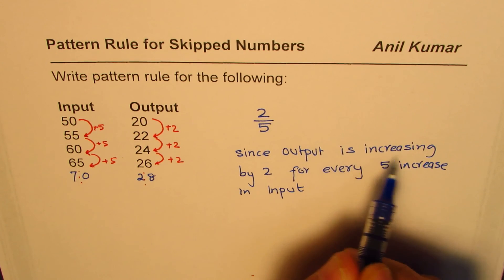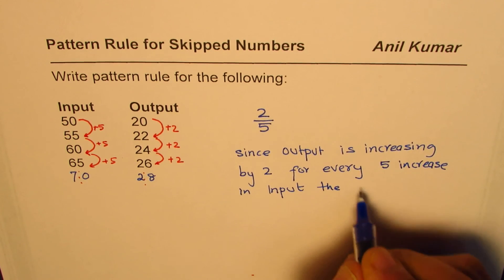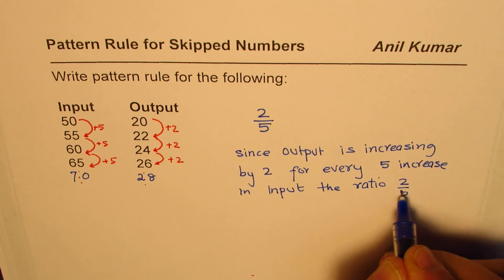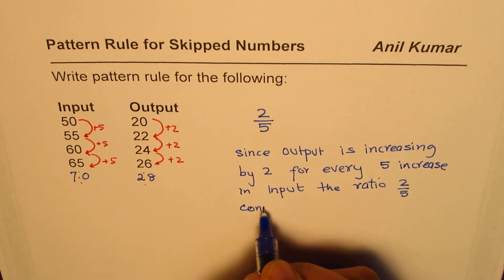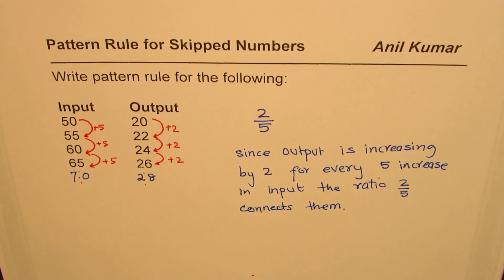The ratio 2 over 5 connects them. So some way or the other, we're not saying exactly, but some way or the other this ratio 2 over 5 connects them.